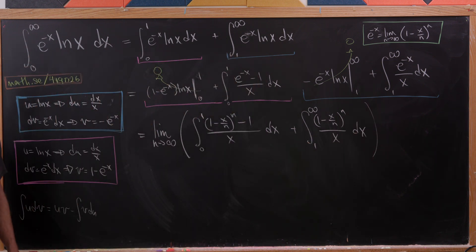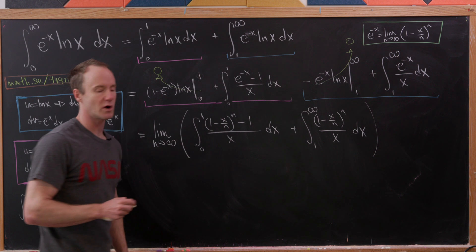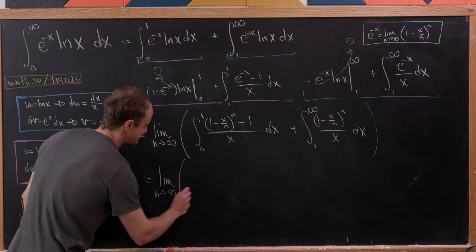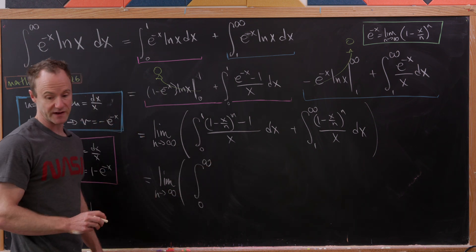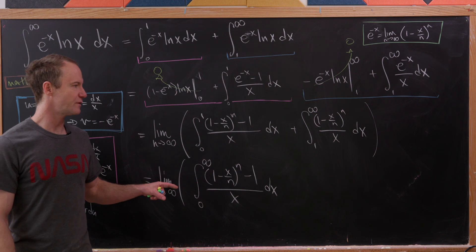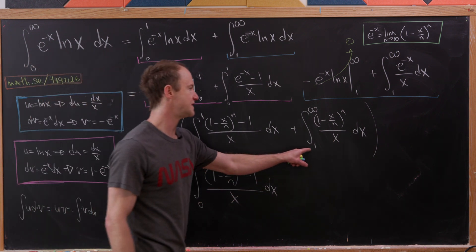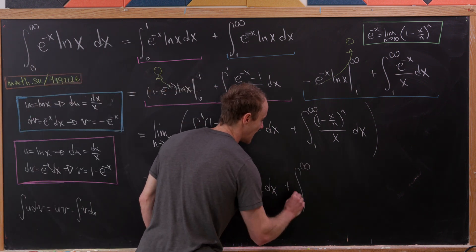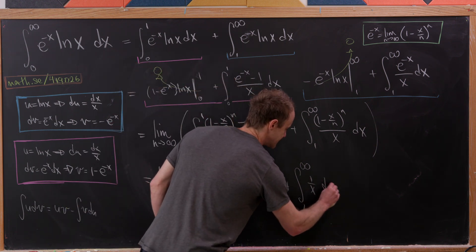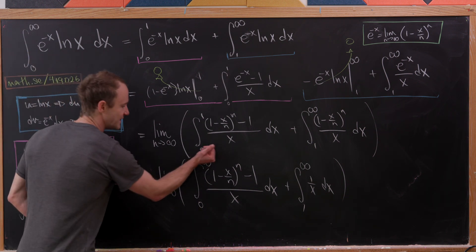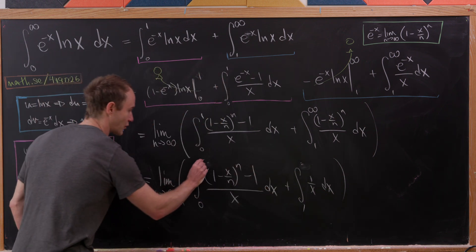Now we'll push these two integrals together and keep the minus one over x term separate, giving us the limit as n approaches infinity of the integral from zero to infinity of (1 minus x over n) to the n minus one, all over x, dx. Notice that we've introduced an integral of one over x from one to infinity, so we must account for that — which by the signs becomes plus the integral from one to infinity of one over x, dx. Then we can replace the infinity bounds with n's, since n is approaching infinity and that's how you define the improper integral.